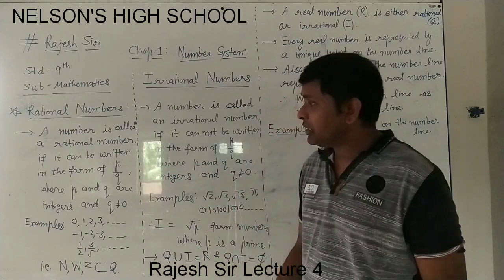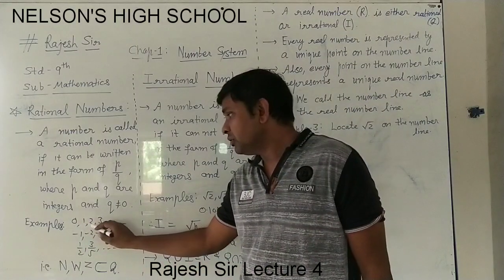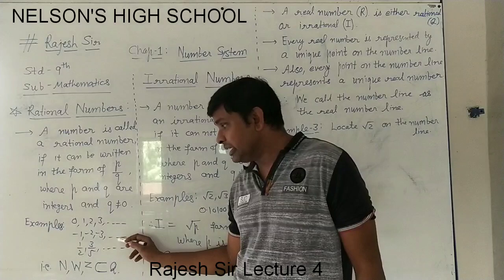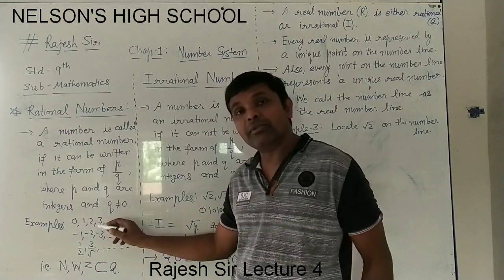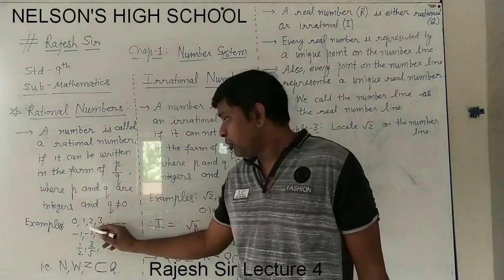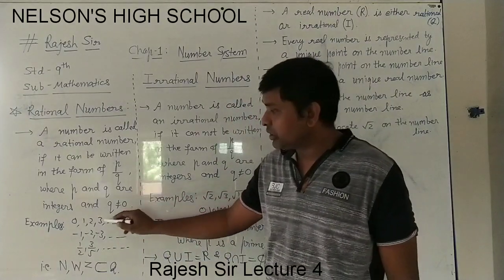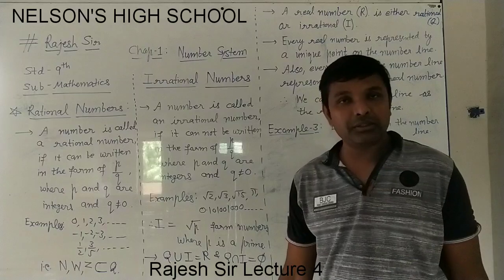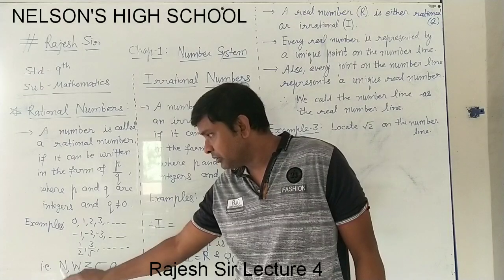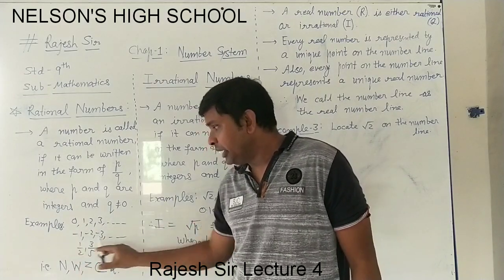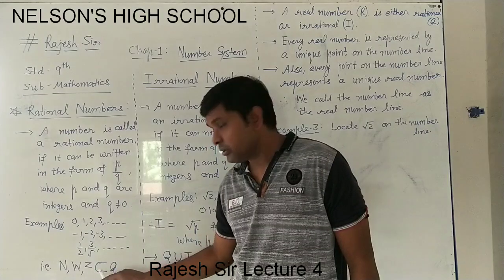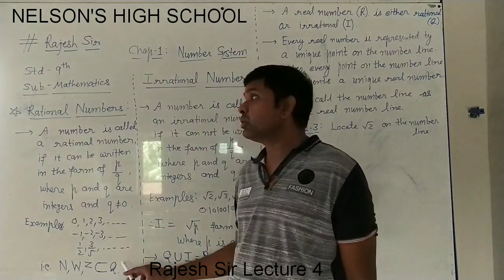What examples come under rational numbers? We can take 0, 1, 2, 3 — all whole numbers, all natural numbers, all integers — because in each of these numbers, as we discussed in the first lecture, we can write the denominator as 1. So 2 upon 1, 3 upon 1, all will be in the p upon q form. These examples indicate that all natural numbers (N), whole numbers (W), and all integers (Z) belong to Q, the set of rational numbers.